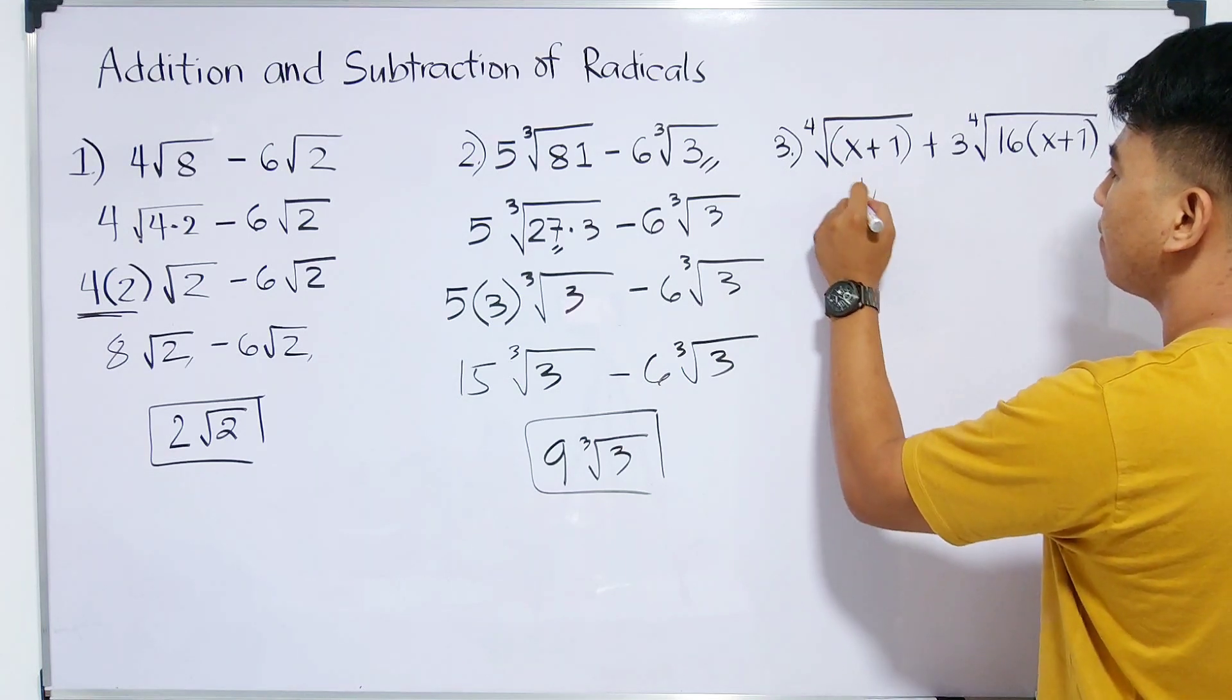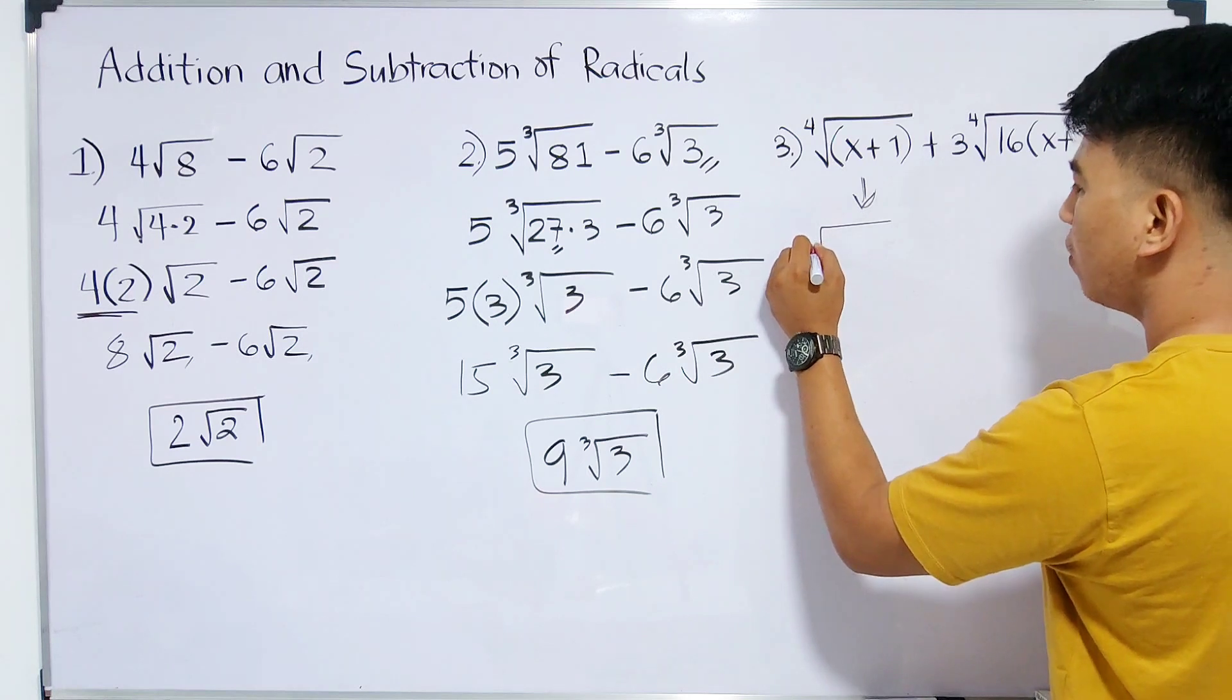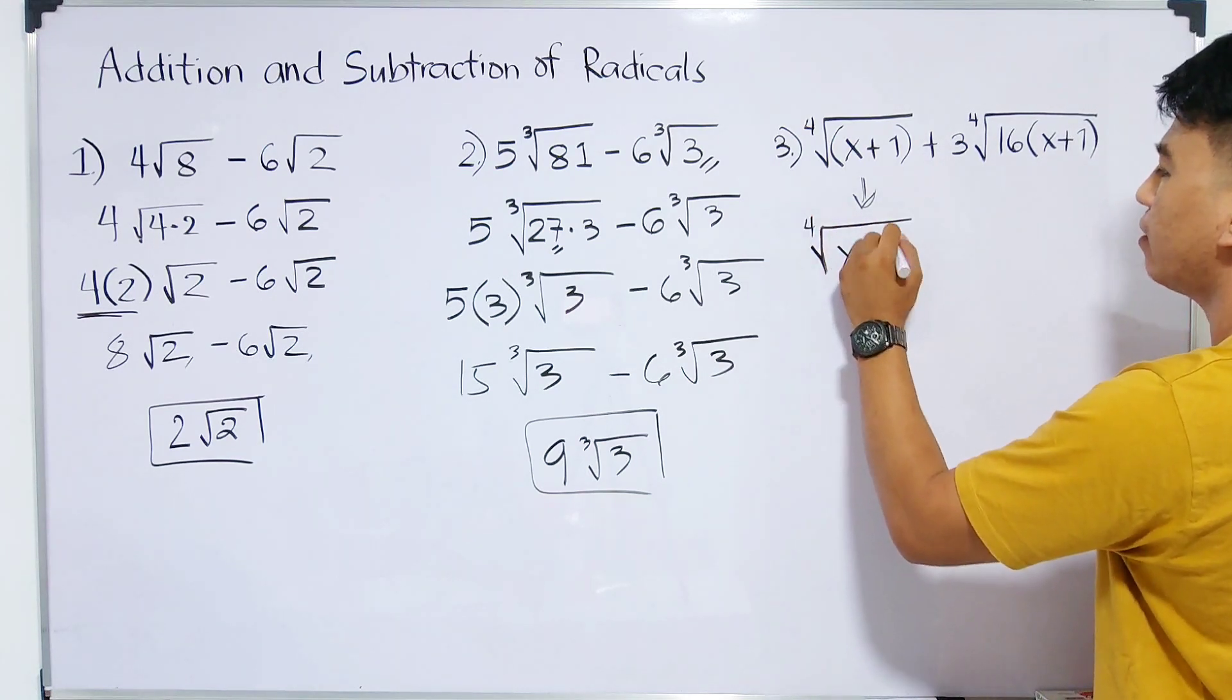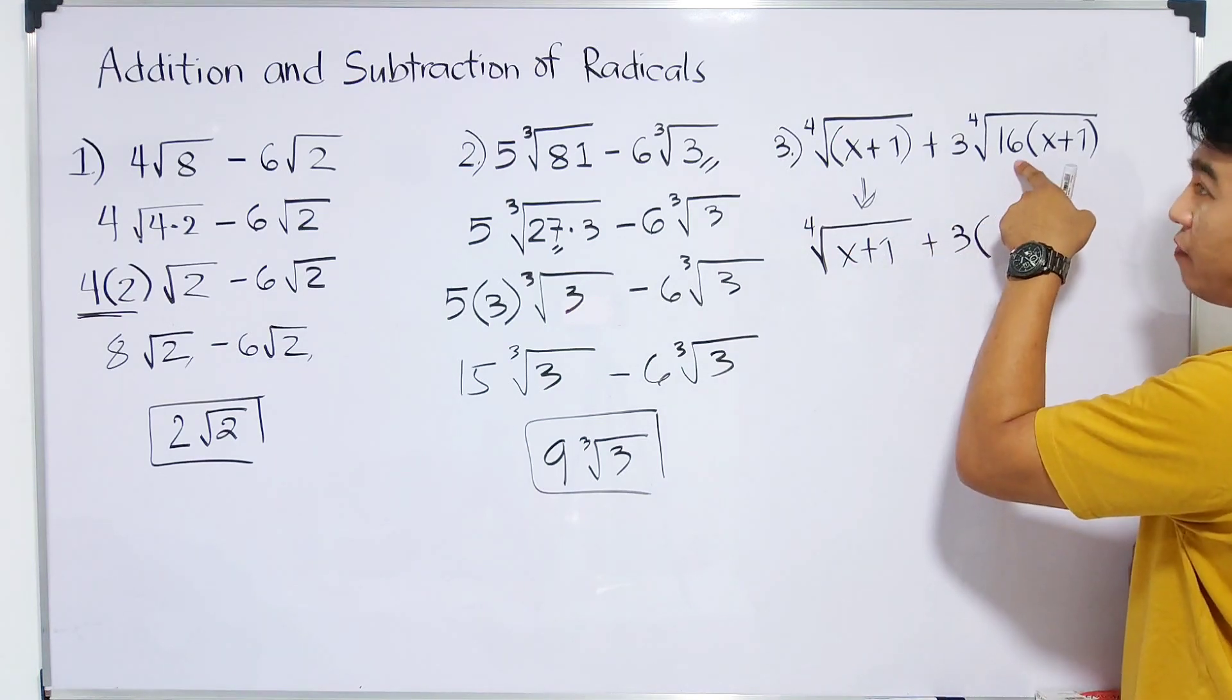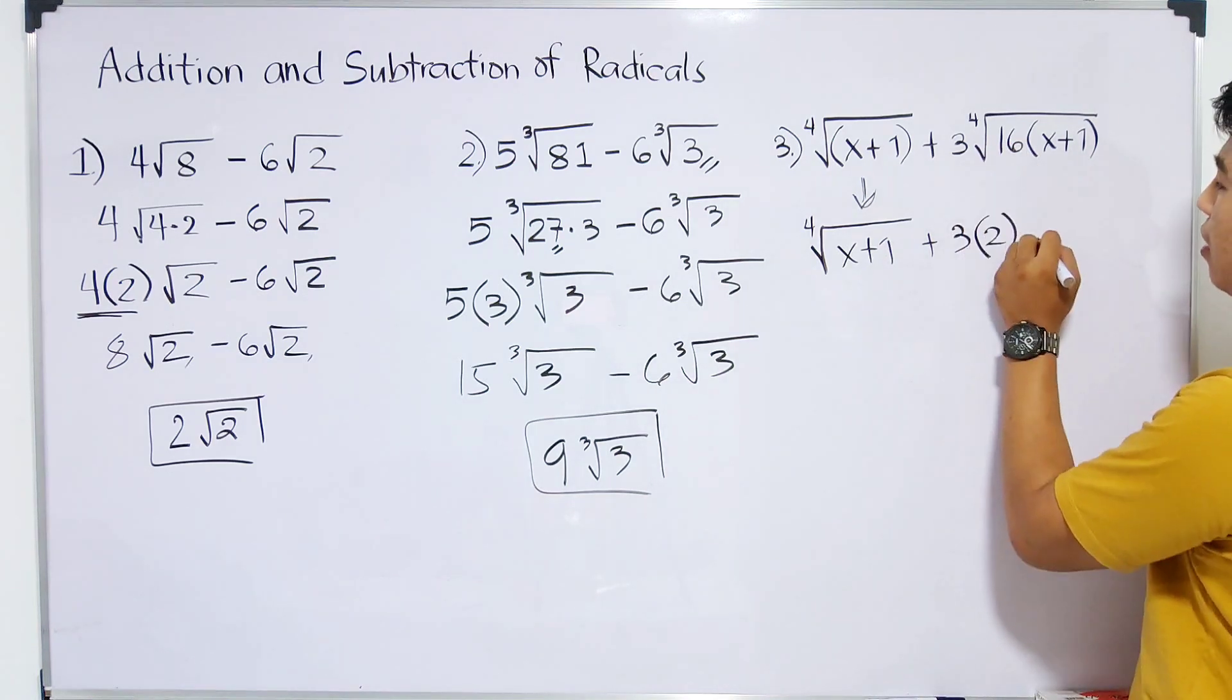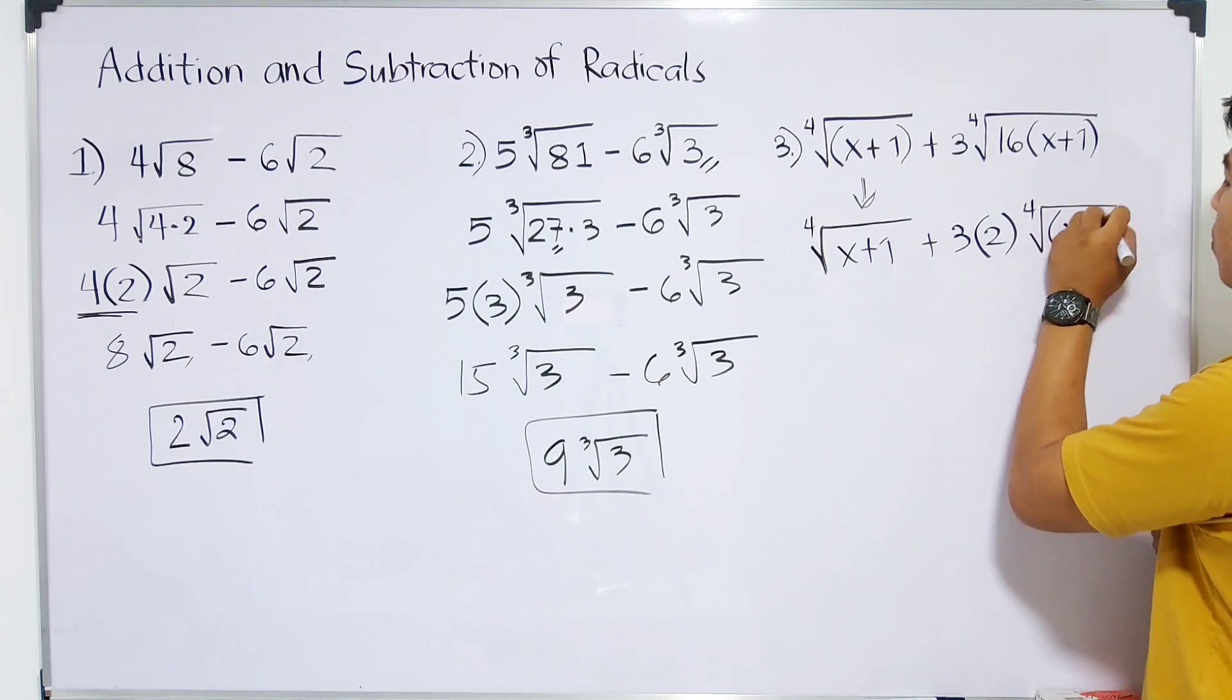We have the 4th root of x plus 1 plus 3 times, the 4th root of 16 is 2. And then, what remains inside is the 4th root of x plus 1.